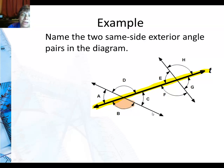So I need to find another angle that's under this yellow line, this transversal, and outside of the two lines. Well, you can see it's angle G. So angle B and angle G are same-side exterior angles.